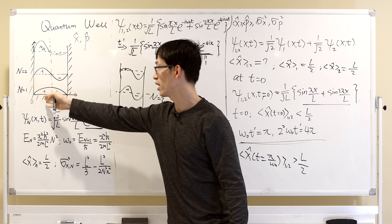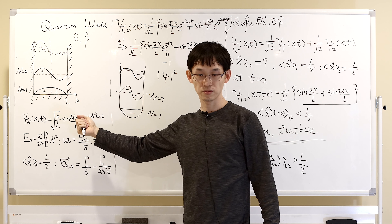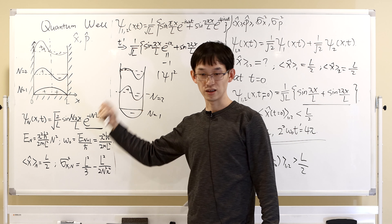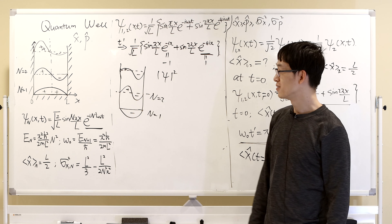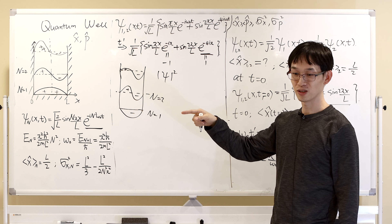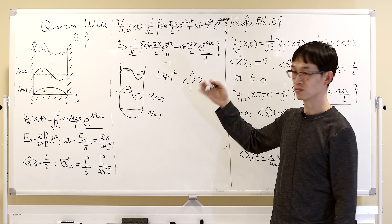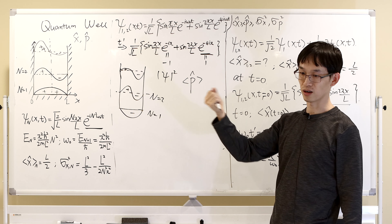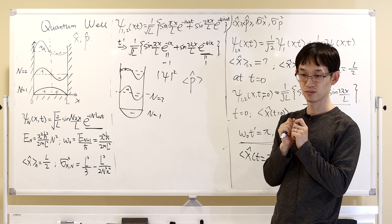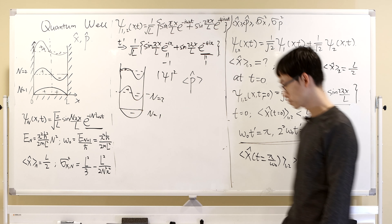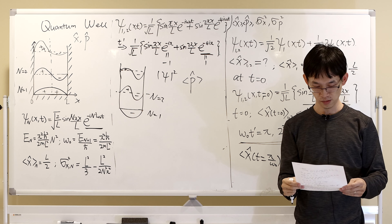So the particle is moving. At time t=0, the expected position is on the left. At time t' = π/ω₀, the expected position is on the right. Then it moves back. It's moving back and forth. This is interesting because for each individual eigenstate, the expected momentum is zero — the particle is not moving. But when you add them together, the particle starts to move. This is quantum interference.